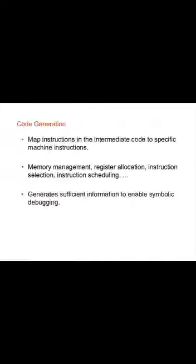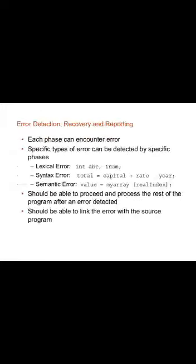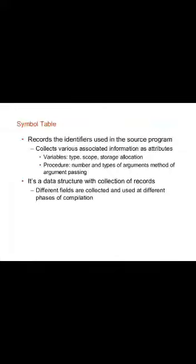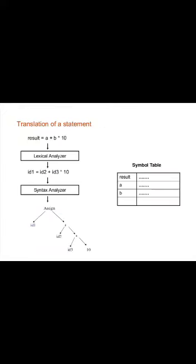Code generation maps the instructions in the intermediate code to specific machine instructions. It involves memory management, register allocation, instruction selection, and instruction scheduling. The symbol table stores new symbols generated during the compilation process. The error handler handles errors generated during the lexical, syntax, and semantic phases.